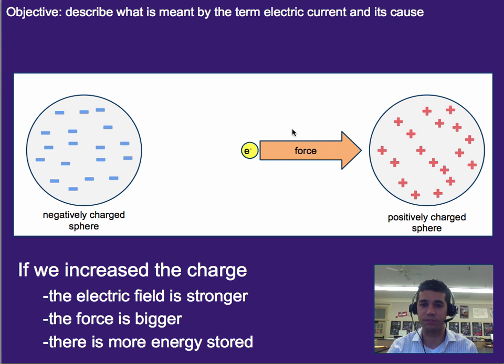The equivalent of these three scenarios would be like increasing the amount of gravity while keeping the height the same, or increasing or decreasing the amount of gravity. So by increasing the amount of charge, the electric field is stronger, the force is bigger, and more energy is stored.